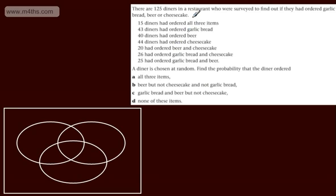15 diners had ordered all three items. 43 diners had ordered garlic bread. 40 diners had ordered beer. 44 diners had ordered cheesecake. 20 had ordered beer and cheesecake. 26 had ordered garlic bread and cheesecake. 25 had ordered garlic bread and beer. A diner is chosen at random.